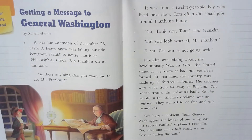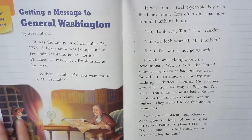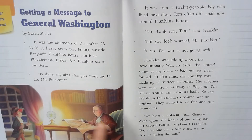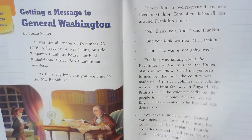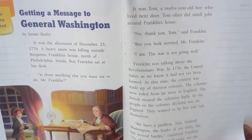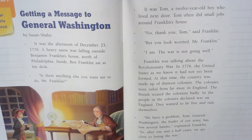Hi boys and girls. Today when we annotate, we are going to be thinking about story structure. Let's first take a look at our story — we've read it before with our vocabulary. I can tell by the pictures that this story has taken place a long time ago. I can see he's looking at a map, they're reading by candlelight, they wear different clothing, and even their hairstyles are different. There are other things we think about when we think of story structure.